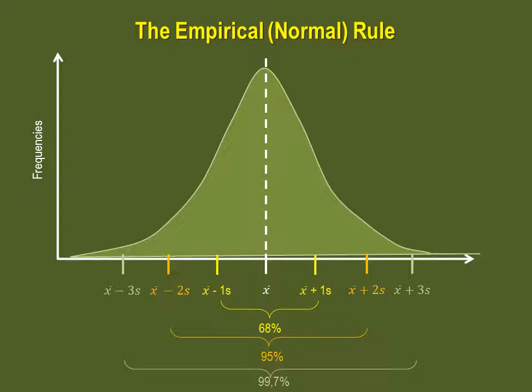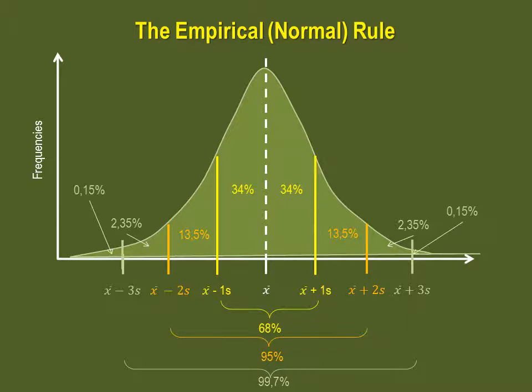We can go further with these percentages. Up to one standard deviation, there are 34% of values on each side of the mean. Between one and two standard deviations on each side of the mean again, there are 13.5% of the values, and between two and three standard deviations on each side of the mean, there are 2.35% of the values. So there is a little 0.15% higher than three standard deviations on each side of the mean as well.